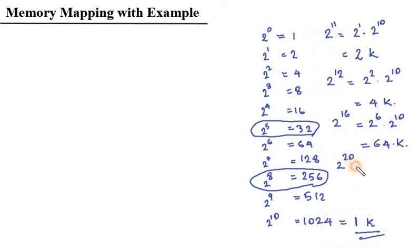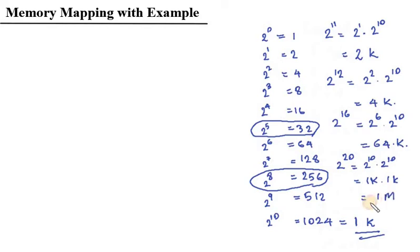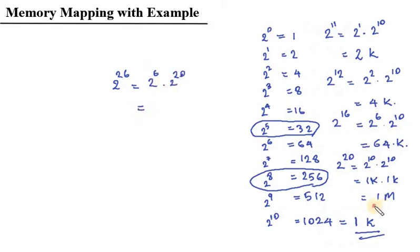2 raised to 20 is equal to 2 raised to 10 into 2 raised to 10, which is 1K into 1K, which is equal to 1 Mega. Now, how about 2 raised to 26? 2 raised to 26 equals 2 raised to 6 into 2 raised to 20. 2 raised to 20 is 1M and 2 raised to 6 is 64, so 2 raised to 26 is 64M.